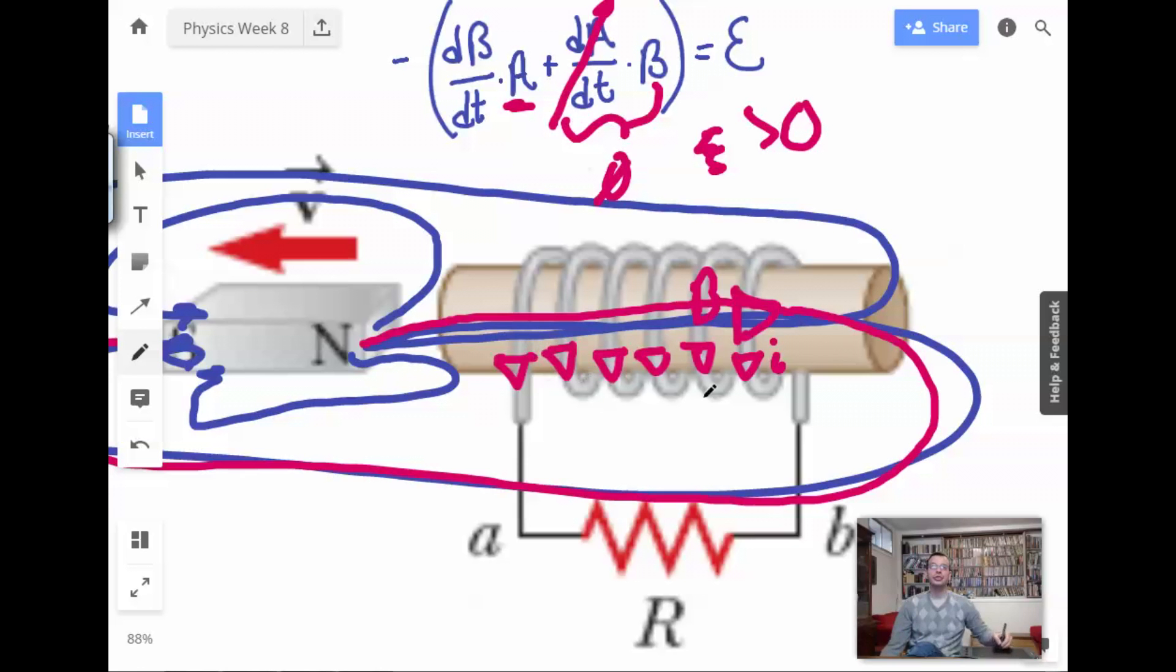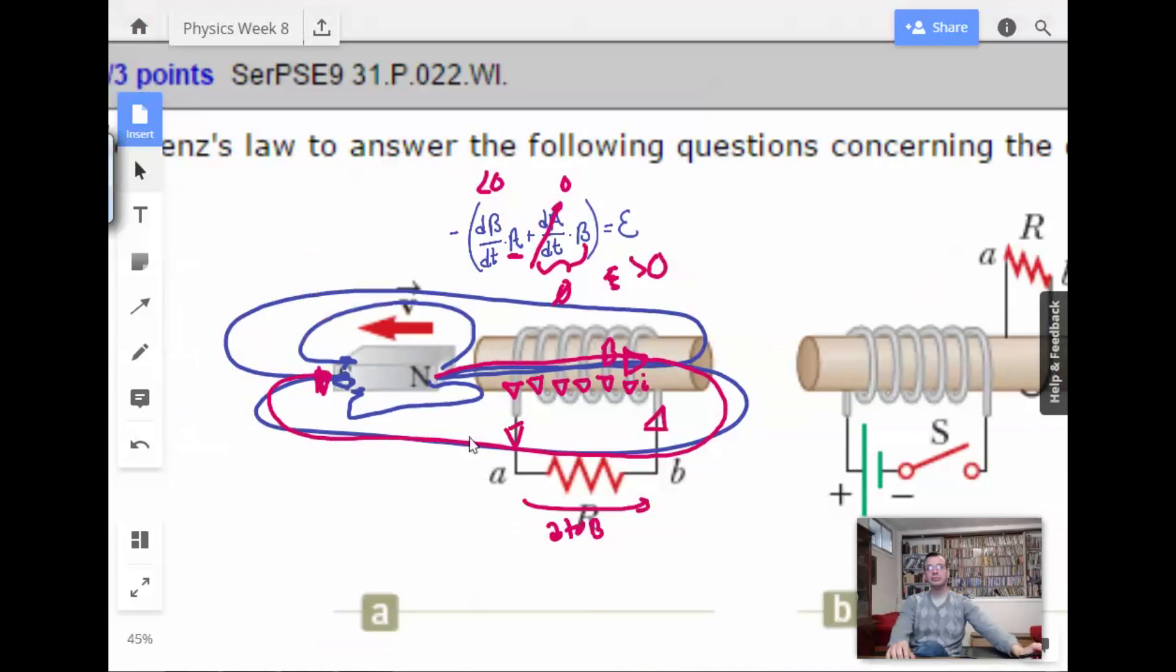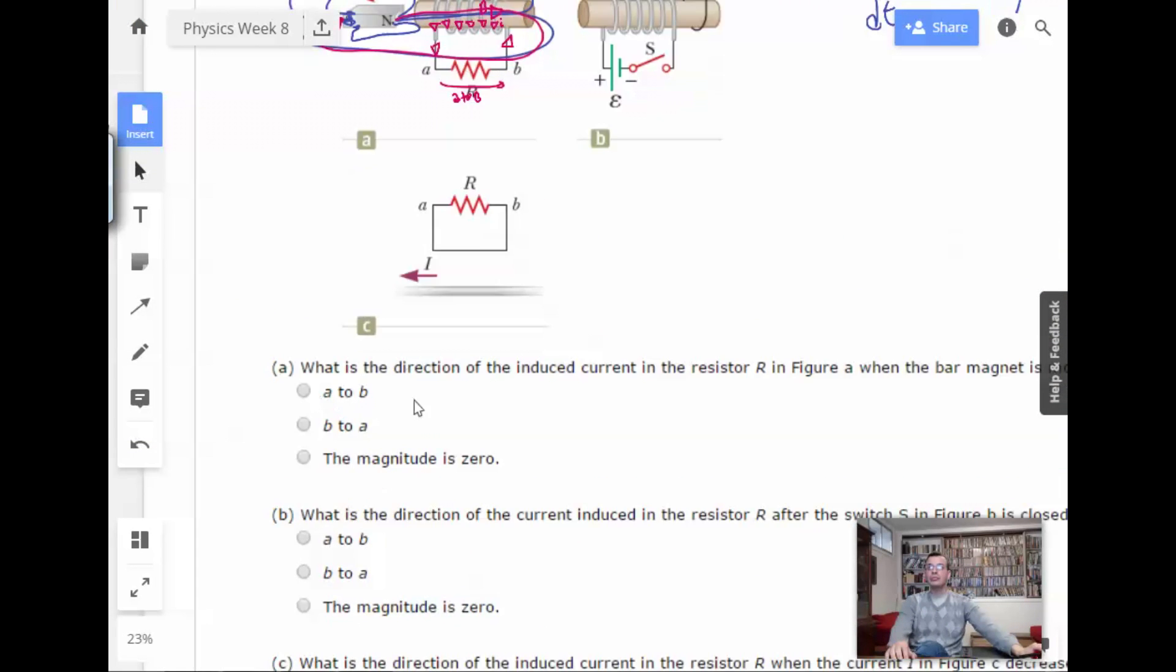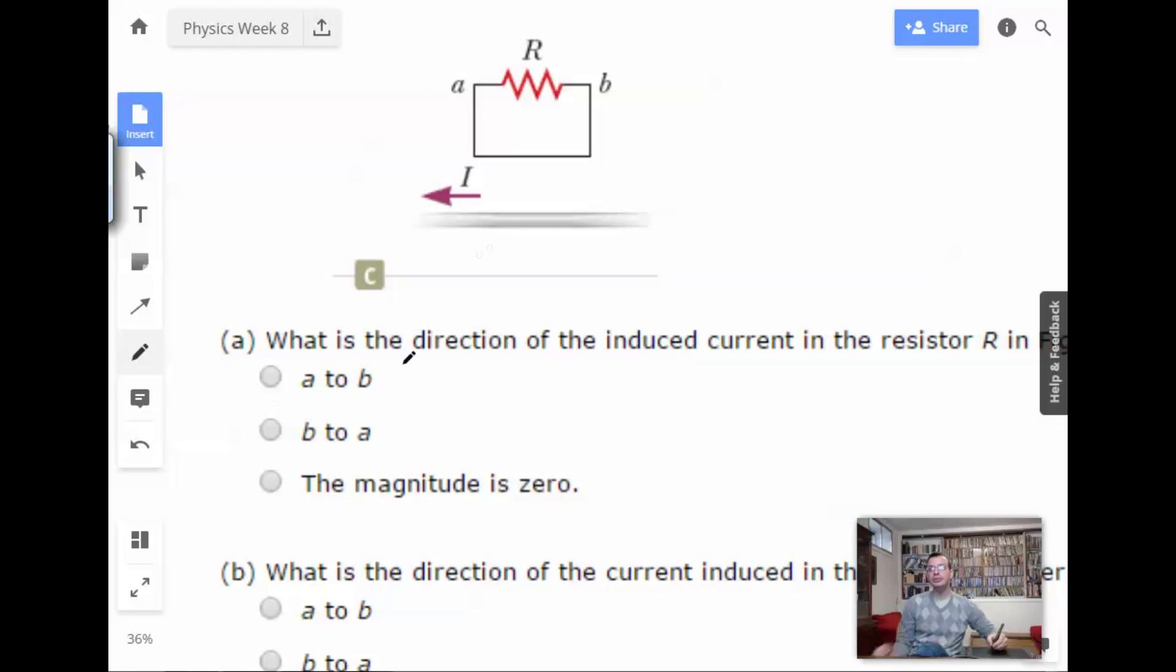So for it to go this way, it has to go this way and around. So it has to go up here, down here, which means current is going from A to B. Because that will then create a magnetic field that's in the same direction as this. Got it. Bam! A to B. And that's how you do this guy.